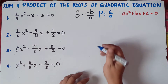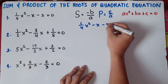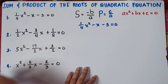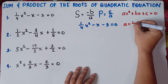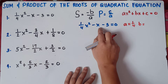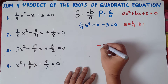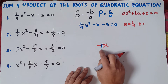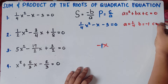So let's start with number 1: (1/4)x² − x − 3 = 0. Find the values of a, b, and c. Our a, beside x², is 1/4. Our b is beside x — we have negative x, so understood there is a 1 here. If you don't see any number before x, it's understood to be 1. Since this is negative, our b is negative 1. And our c is negative 3.